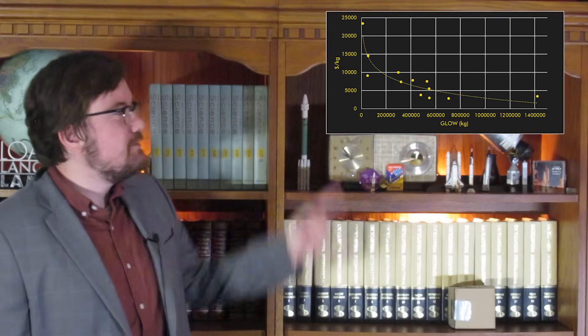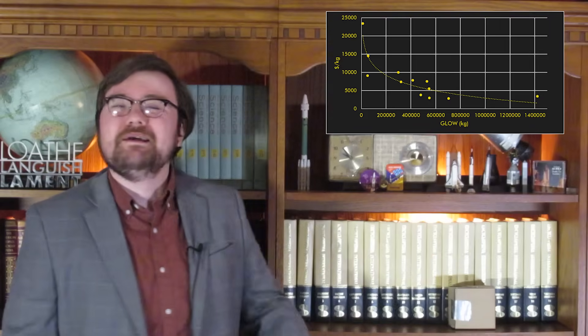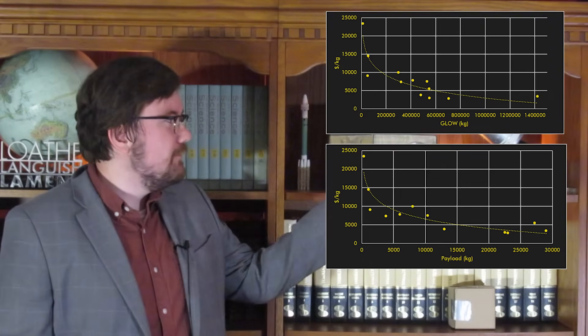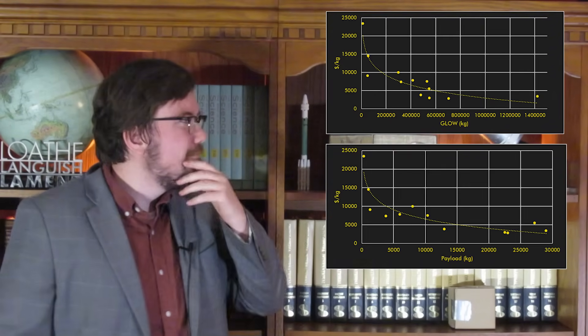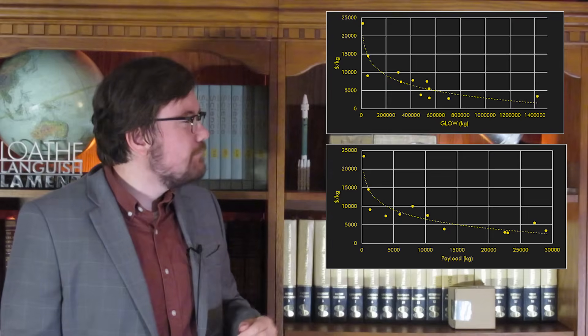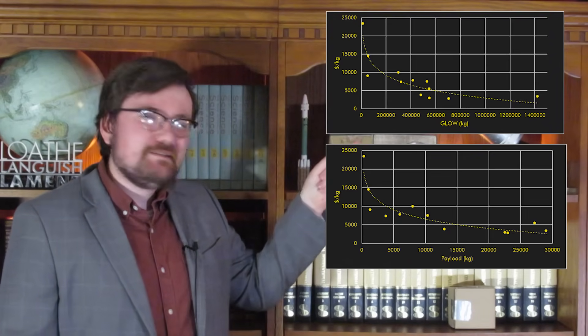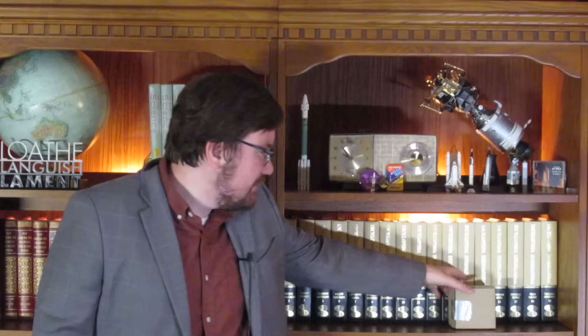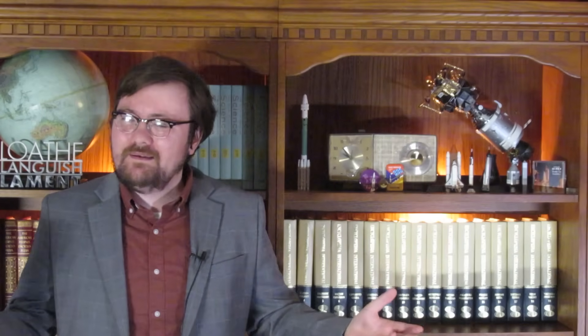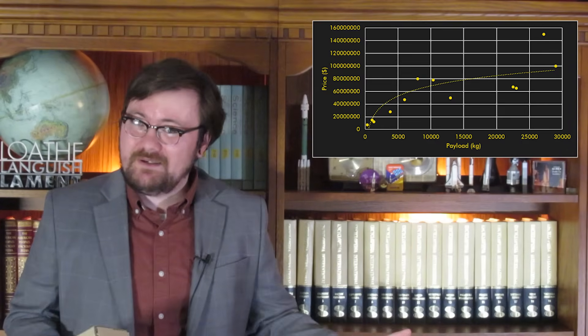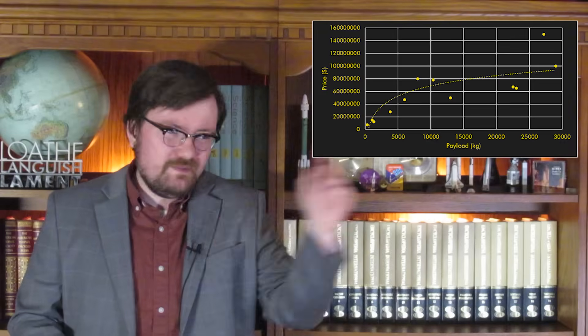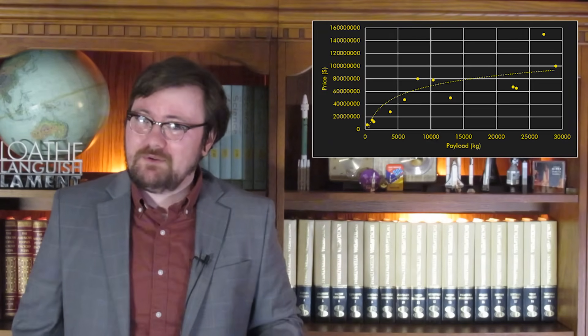Dollars per kilogram. Look, I even made the chart. Oh wait, I lied. See this chart? This is dollars per kilogram versus gross liftoff weight. Hey, that's weird. And this is the chart for dollars per kilogram for payload to low-earth orbit, or generic low-earth orbit. Isn't that interesting? You'll notice something: dollars per kilogram basically only correlates to gross liftoff weight and payload capacity.